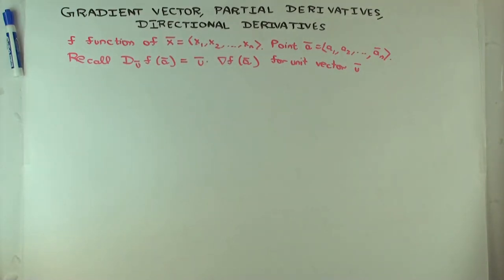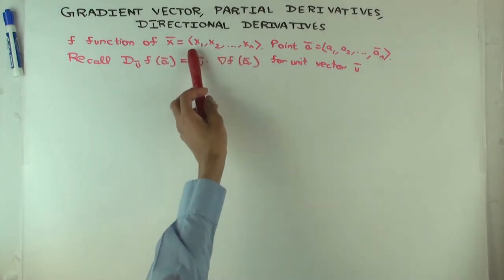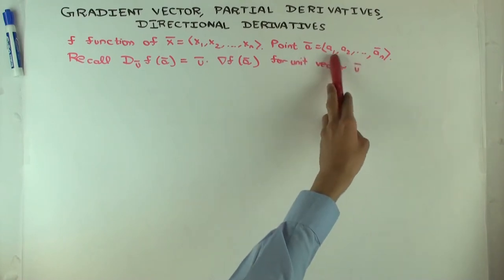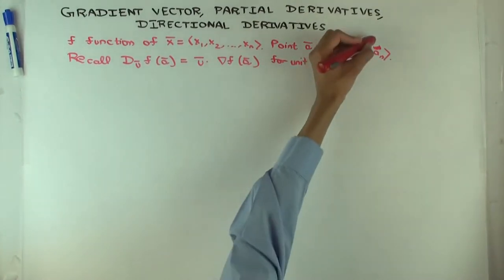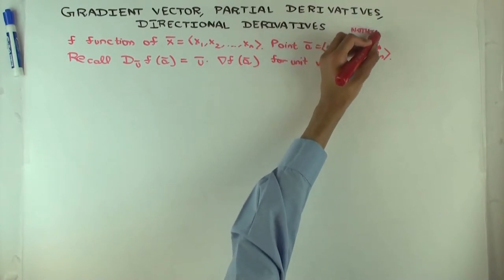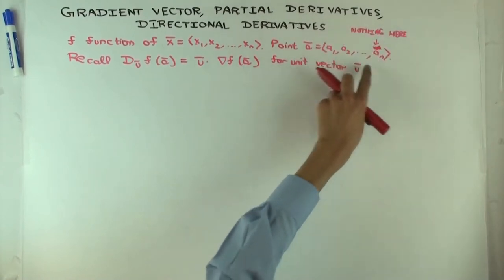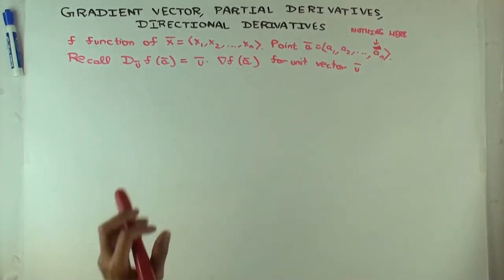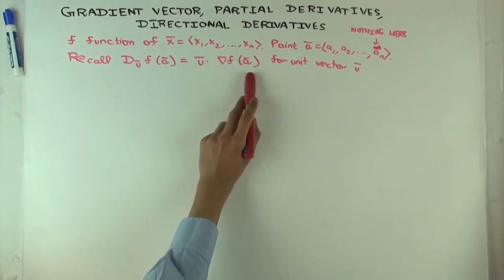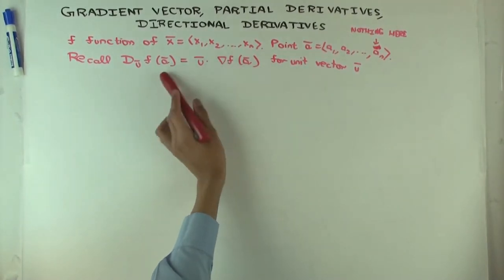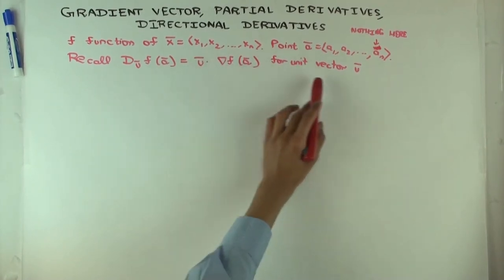At the end of this talk, you can forget all the subtlety — you shouldn't, but as far as simple examples are concerned, this really tells you everything about how to compute things. So recall that you have a function of a vector input x with n coordinates. You have a point A with those coordinates. We recall that the directional derivative of f in a direction u at a point A is u dot the gradient vector, if the gradient vector exists.